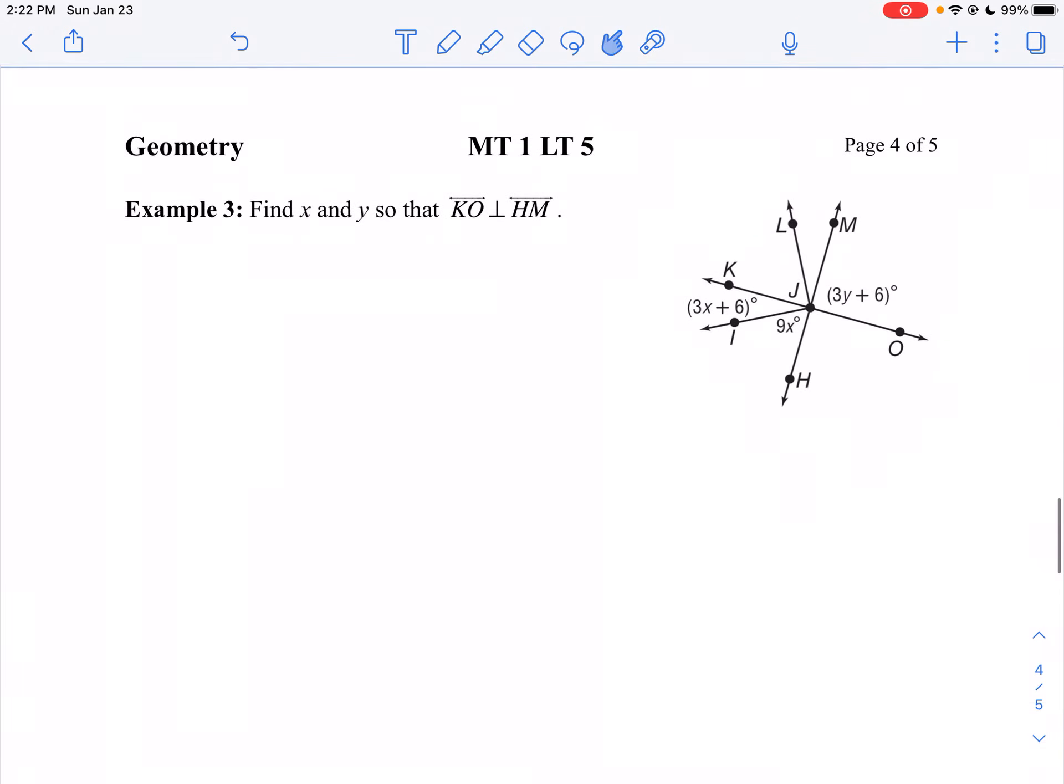Let's take a look at example three. I want to find X and Y so that KO is perpendicular to HM. What I'm going to do is put my right angle symbol where KO and HM intersect at O. So I've got four of those angles.